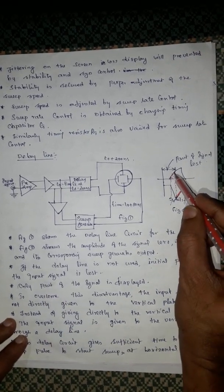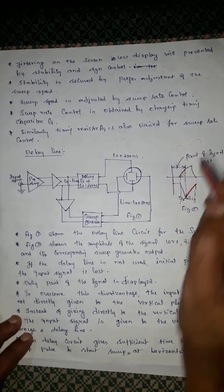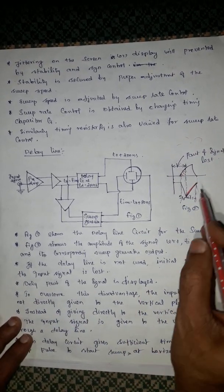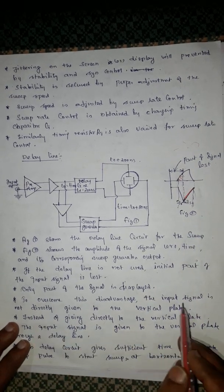If the delay line is not used, the initial part of the input signal, this portion, will be lost. Only part of the signal is displayed after this one. To overcome this, the input signal is not directly given to the vertical plate.